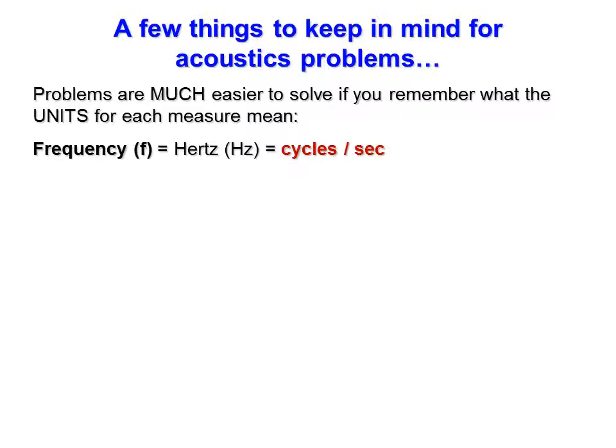With frequency — one of the metrics we use to describe waves — frequency is denoted by little f and given in units of Hertz, sometimes kilohertz, which is 1000 Hertz. Hertz stands for cycles per second. If you write it out as cycles per second rather than just Hertz, it helps you see the relationship between this and other variables. Keep in mind that one cycle equals one wave, so frequency is the number of waves per second.